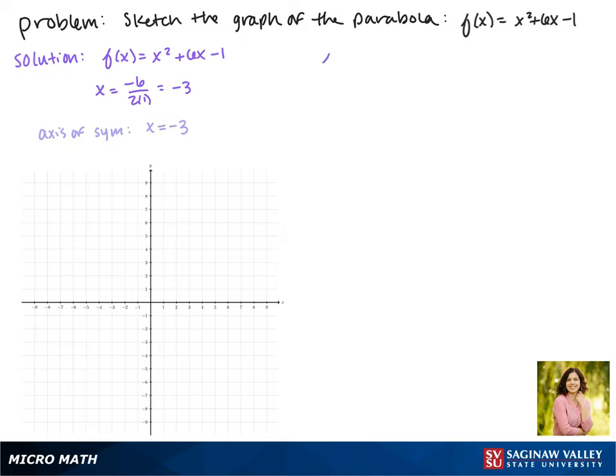To find the y-value of the vertex, we're going to plug -3 back into our equation for x, so we get (-3)² + 6(-3) - 1, and we end up with f(-3) = -10. This makes our vertex the point (-3, -10).